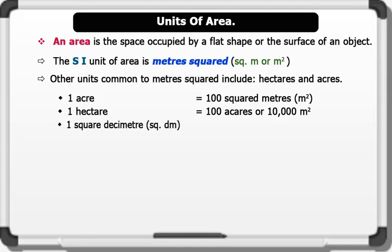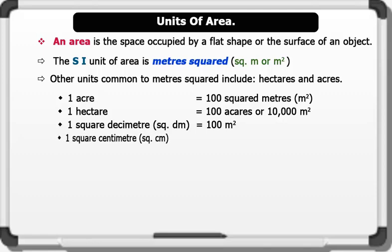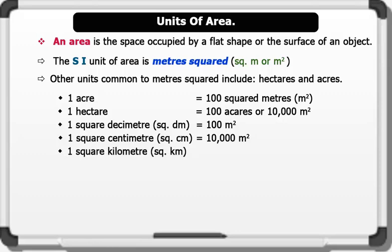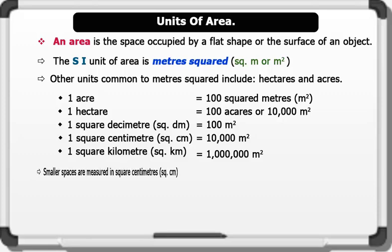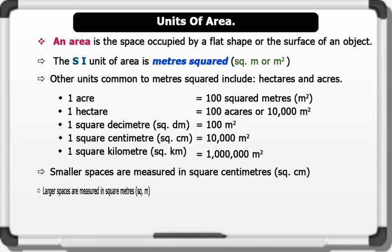1 square decimeter equals 100 square meters. 1 square centimeter equals 10,000 square meters. Note that smaller spaces are measured in square centimeters, while larger spaces are measured in square meters.